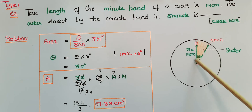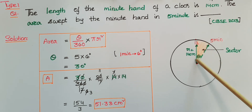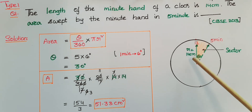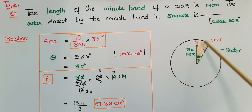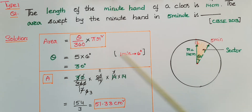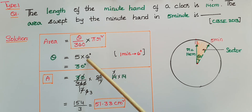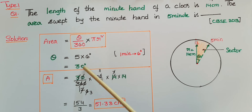The area swept is nothing but the area of the sector. We need to find angle theta. We know that in one minute the minute hand makes an angle of 6 degrees. So in 5 minutes, theta is equal to 5 into 6 degrees — here 5 is the number of minutes, and in one minute it makes 6 degrees — so 5 into 6 gives 30 degrees.